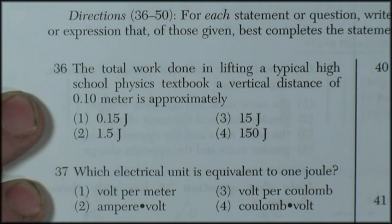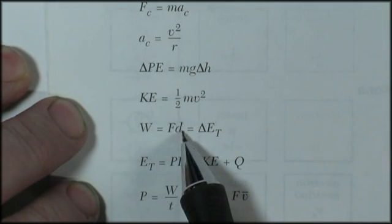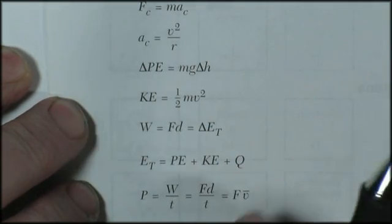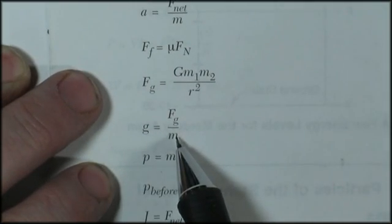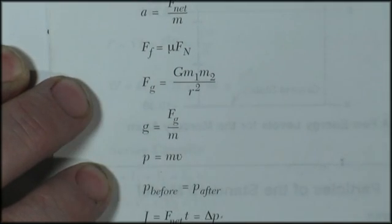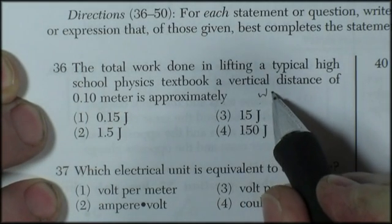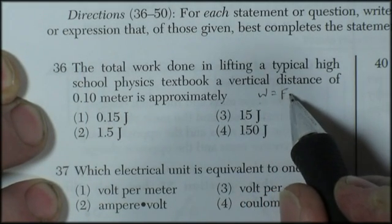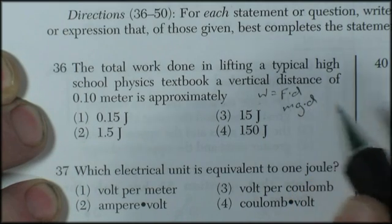The total work done lifting a typical high school physics textbook a vertical distance of 0.1 meters. The formula for work is force times distance. The force in this case would be the weight, the force done against gravity, which would be mg. So we could say that the formula for work is force times distance or mg times the height.